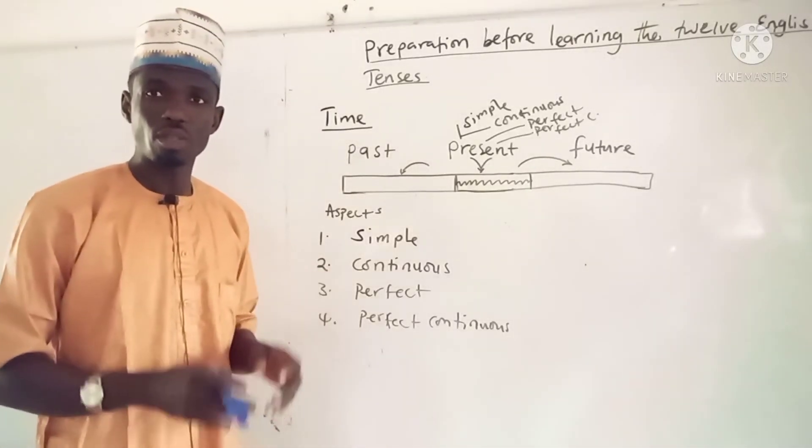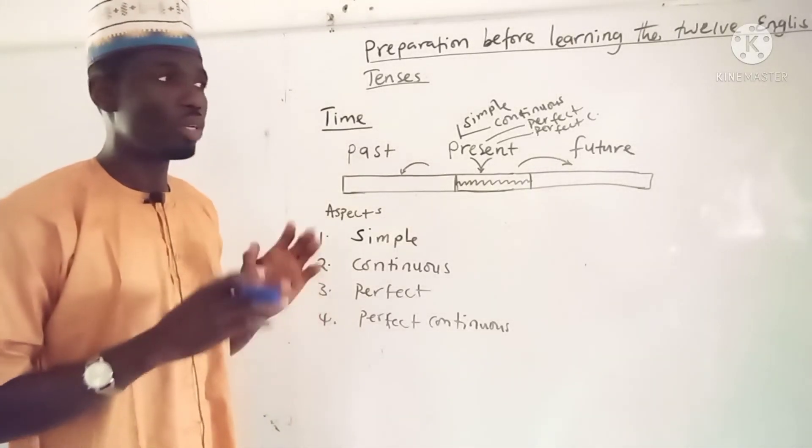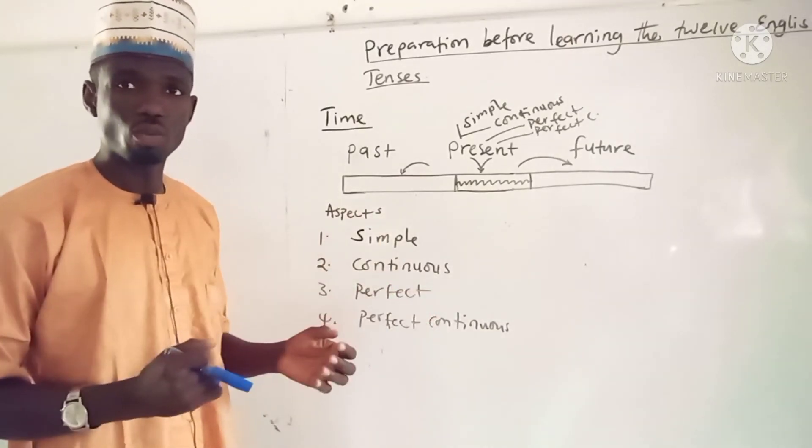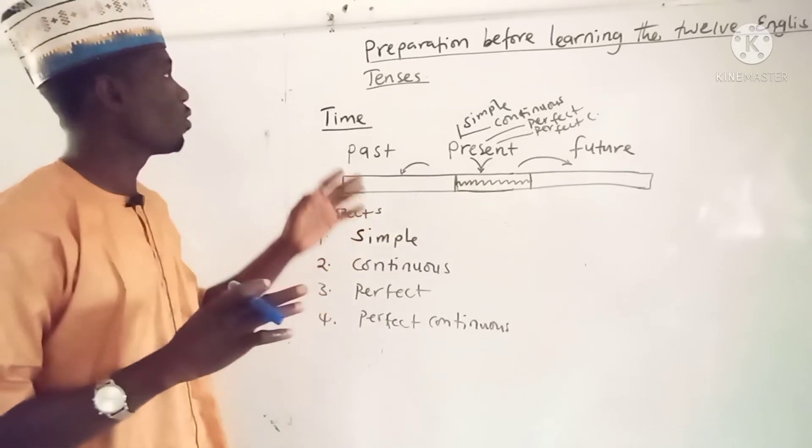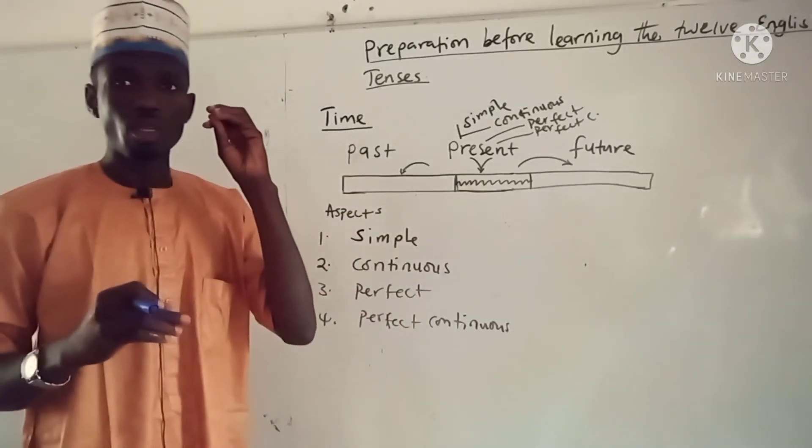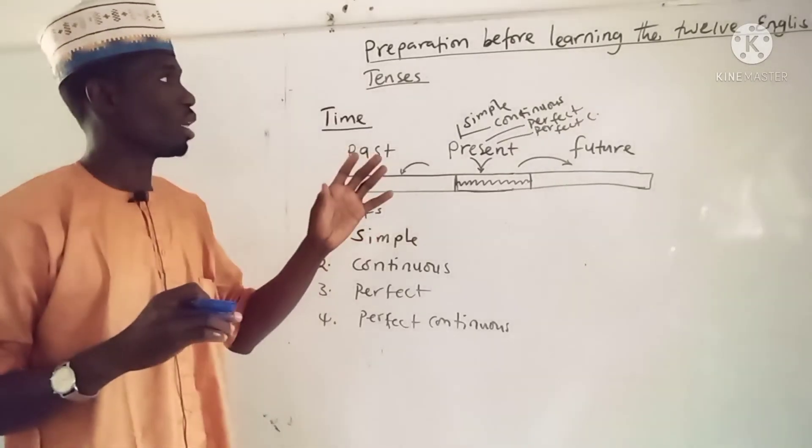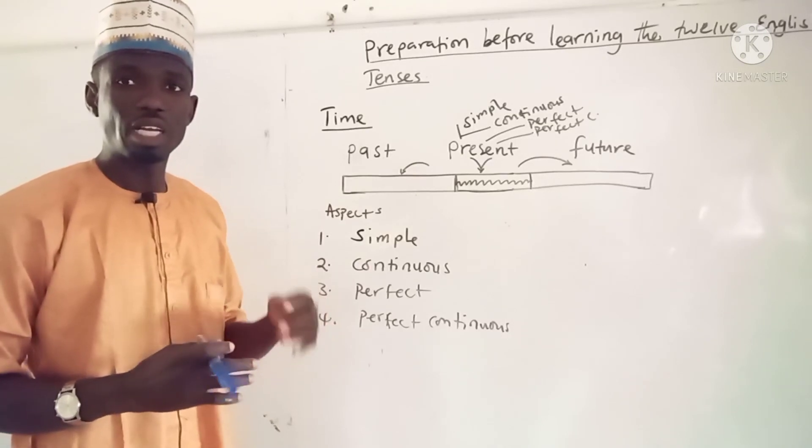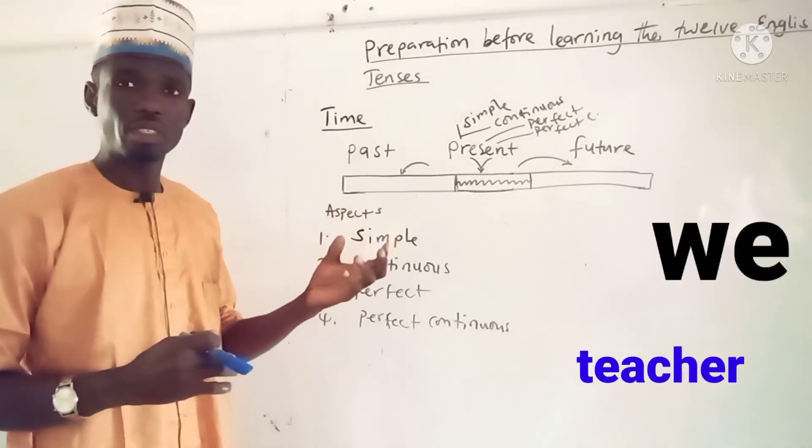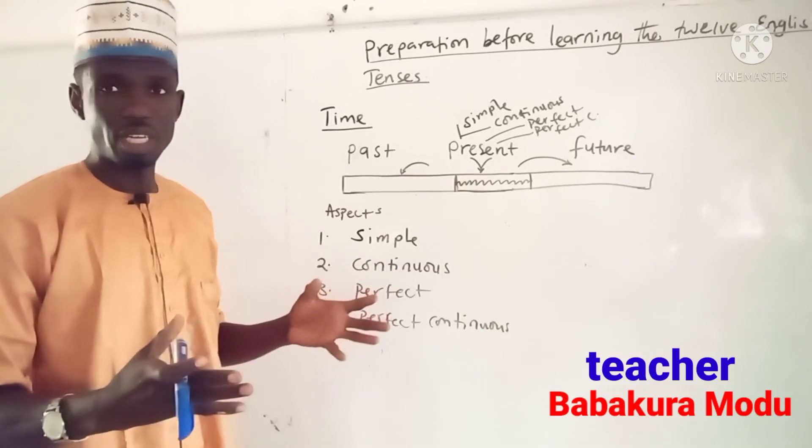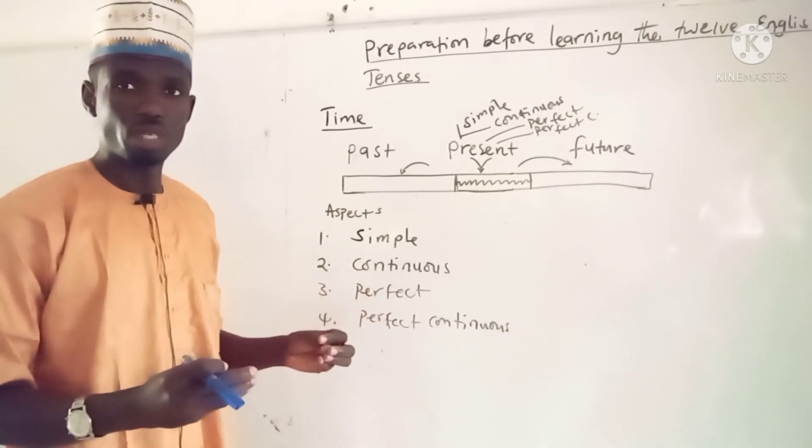Personal pronouns. So the second thing you have to learn before learning the twelve tenses, you have to learn the personal pronouns. Personal pronouns here: I, we, you, they, he, she. There are some personal pronouns.